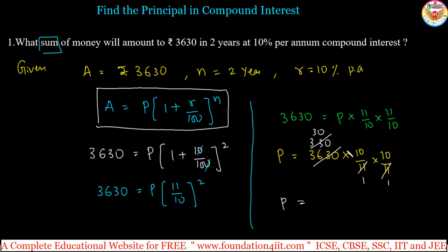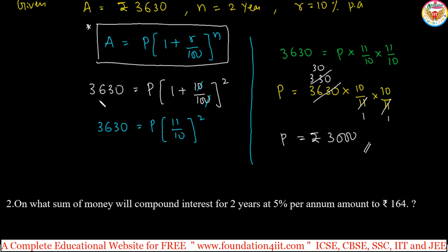P is equal to 30 into 10 into 10. That is 30 into 10 equals 300, and 300 into 10 equals 3000. So the principal is 3000. The calculation is simple — just apply the same formula and substitute. Let us see one more question on the same concept to get a clearer idea.